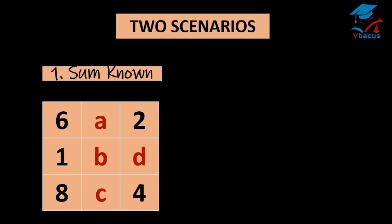There are two scenarios. One is when sum is known. In this magic square, we can see the sum of one column is given. That is 6 plus 1 plus 8, that is 15.